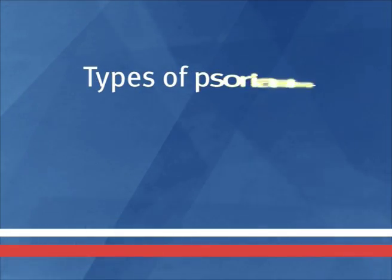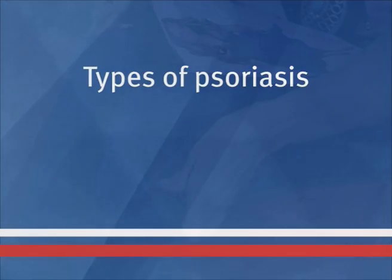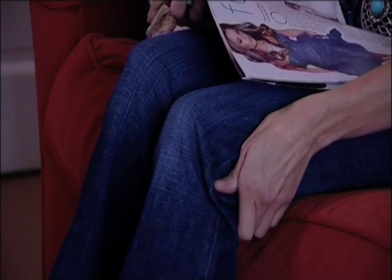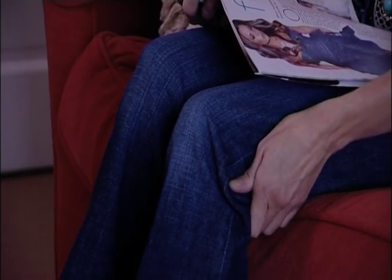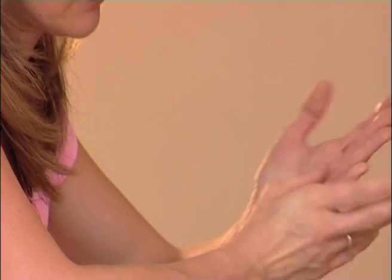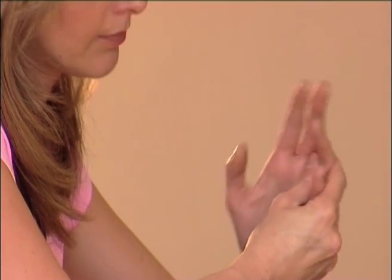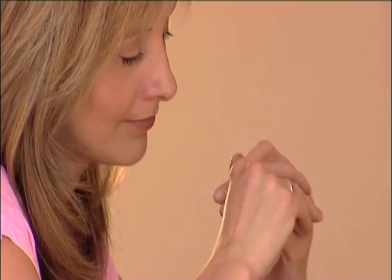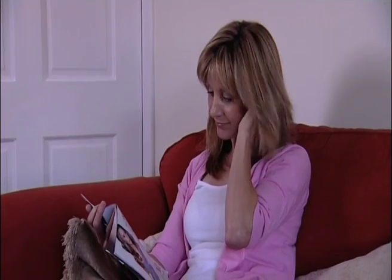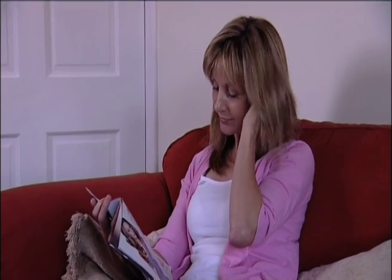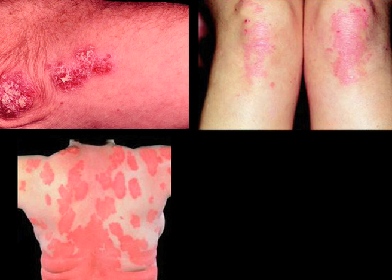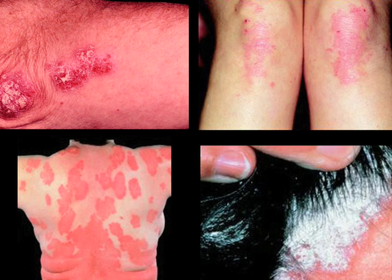Types of psoriasis. There are several different types of psoriasis. The most common forms are plaque psoriasis and guttate psoriasis. Psoriasis can appear anywhere on the body but commonly affects the elbows, knees, torso and scalp.